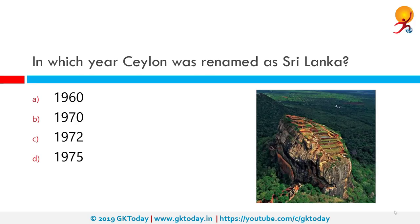In which year was Ceylon renamed as Sri Lanka? The correct answer is 1972. Ceylon was a British Crown Colony between 1815 and 1948. From 1815 to 1948, British possessions included the whole island of Ceylon, which is now the nation of Sri Lanka.